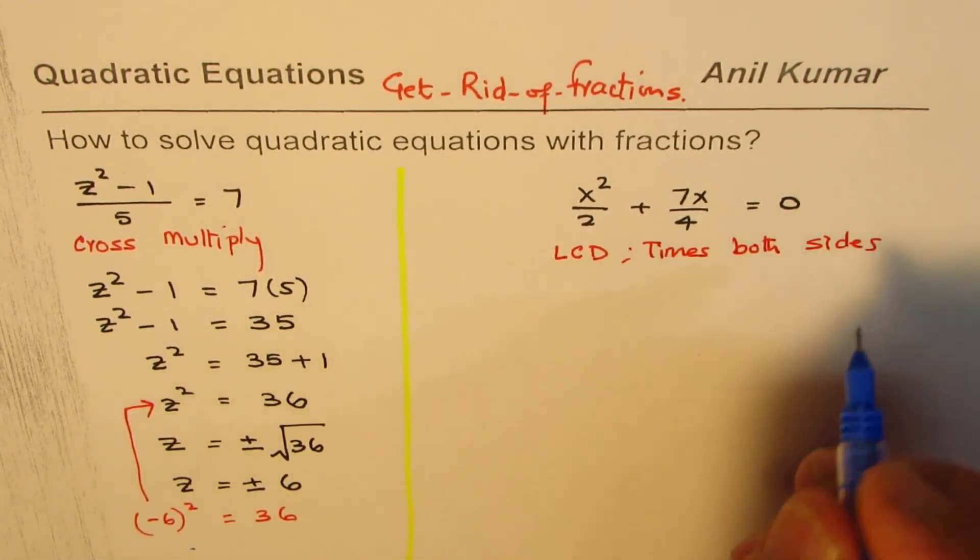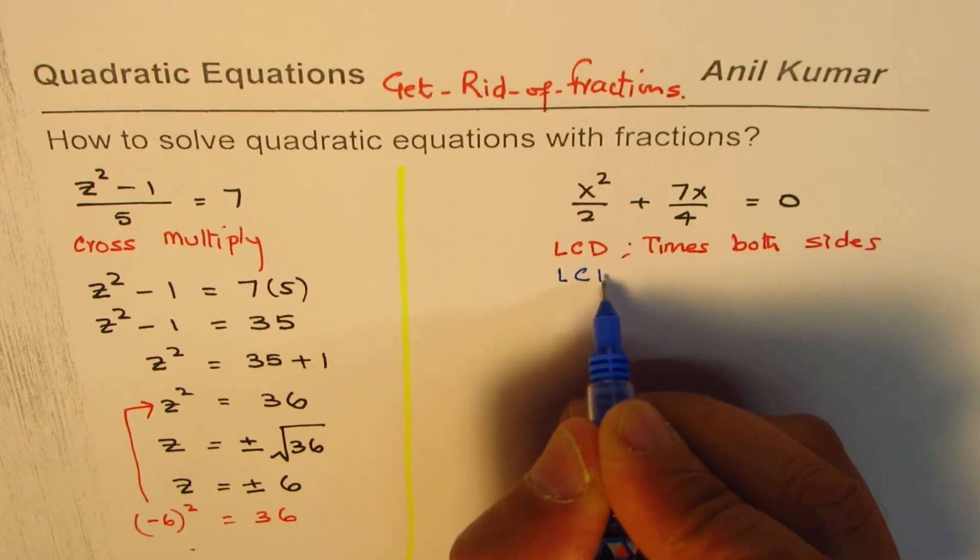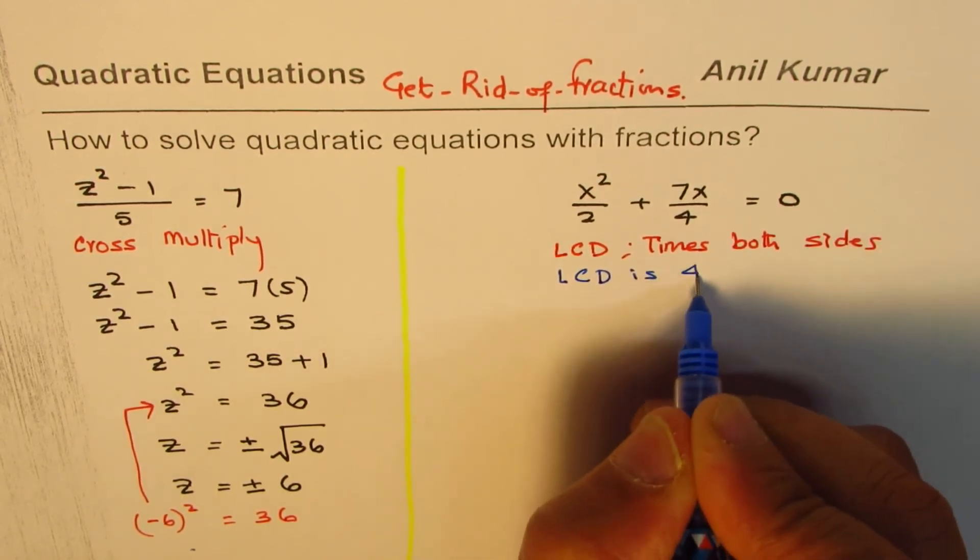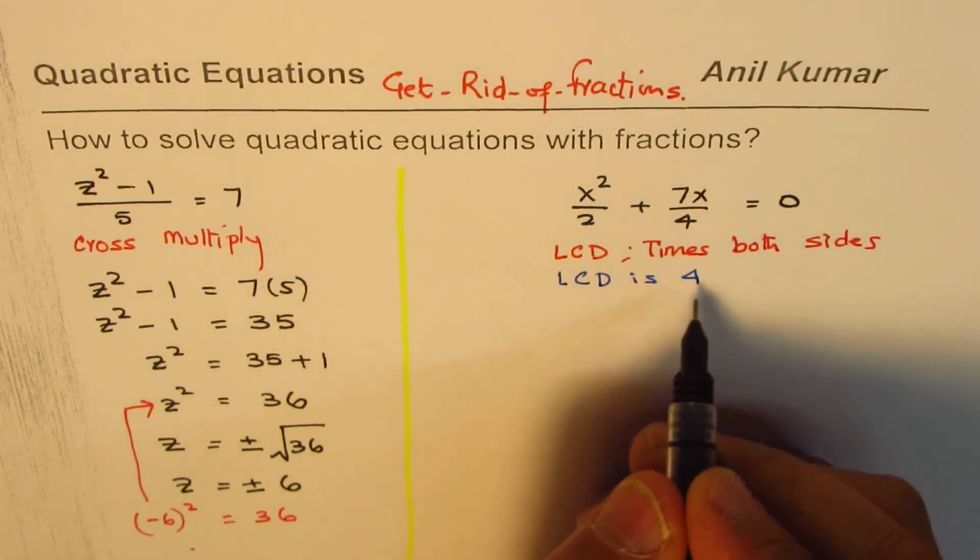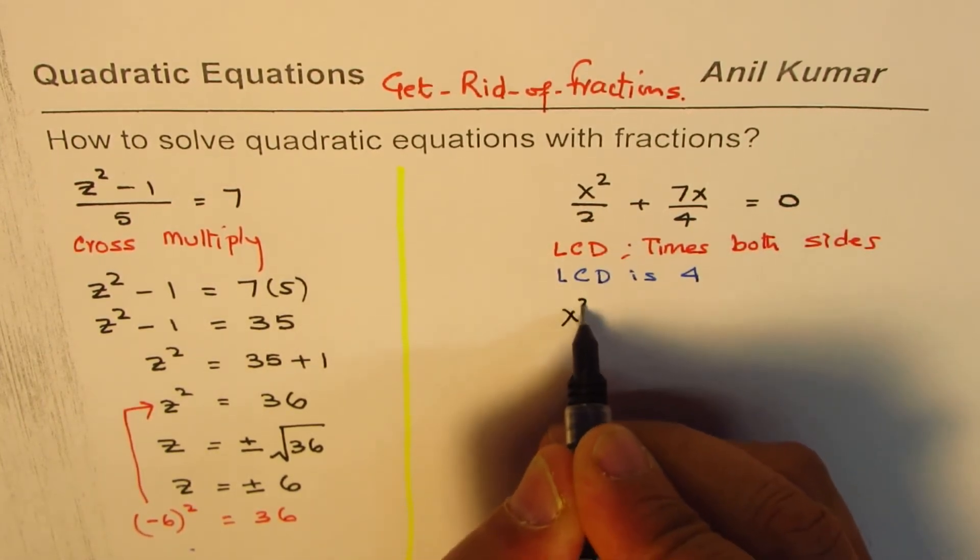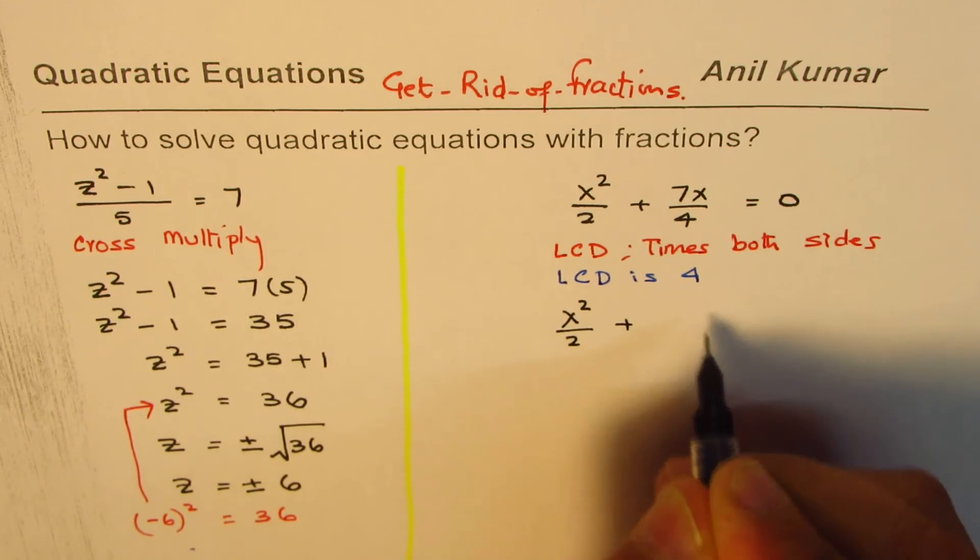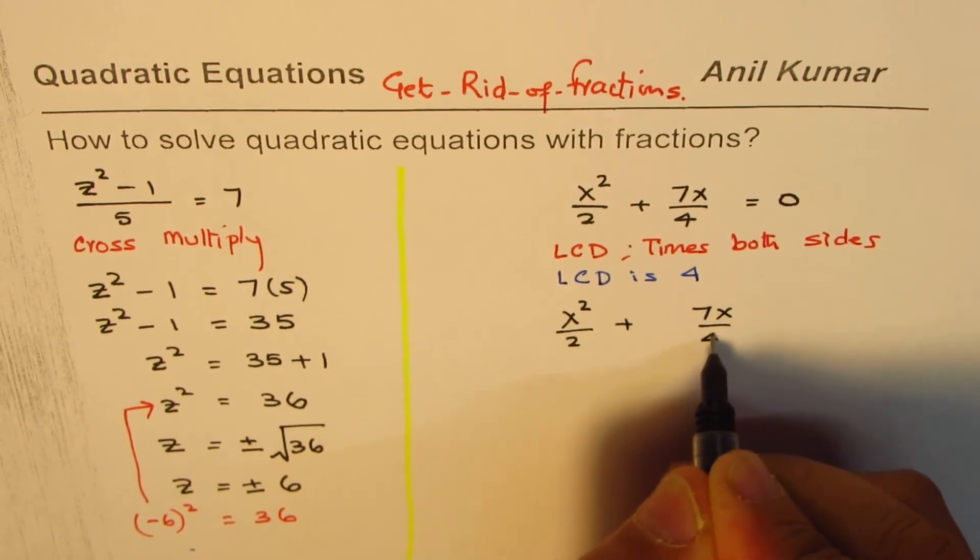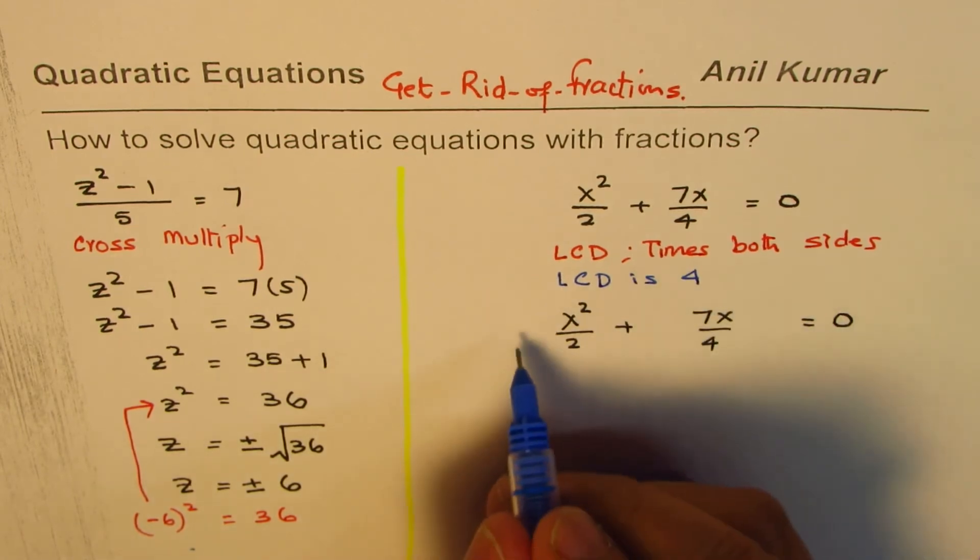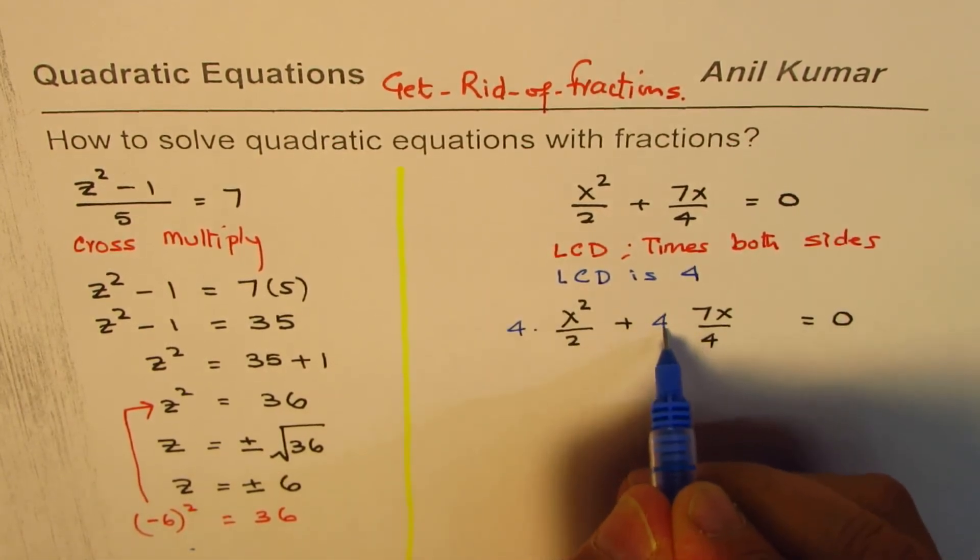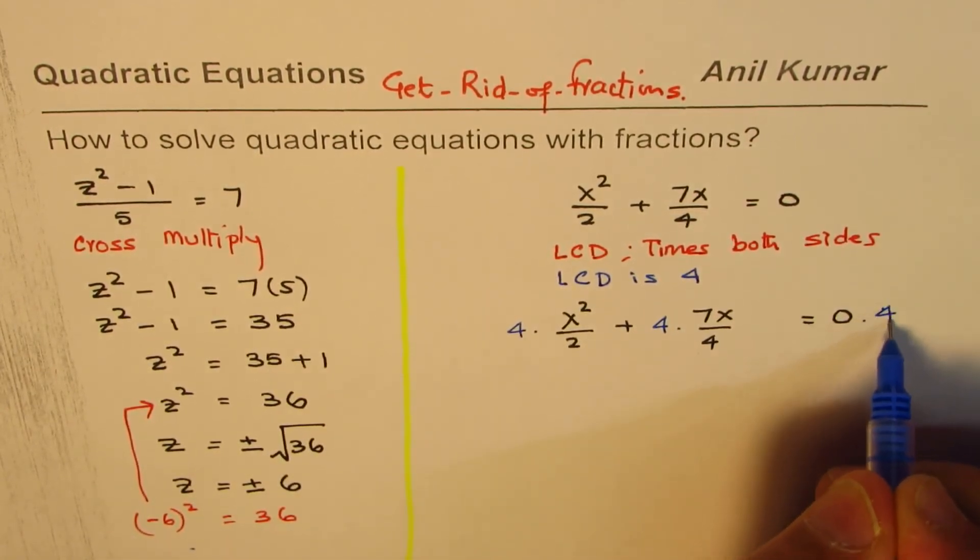2 and 4. 4 is the lowest common denominator. So the lowest common denominator is 4. So what we will do here is we'll multiply each term by 4. So we have x squared over 2 plus 7x over 4 equal to 0. So we will times by 4. So we get 4 times this, 4 times this, and this times 4.